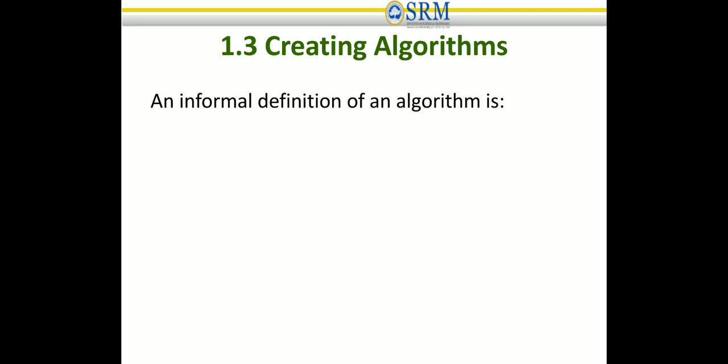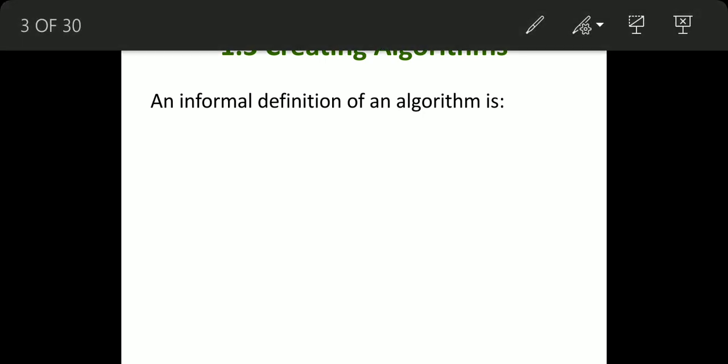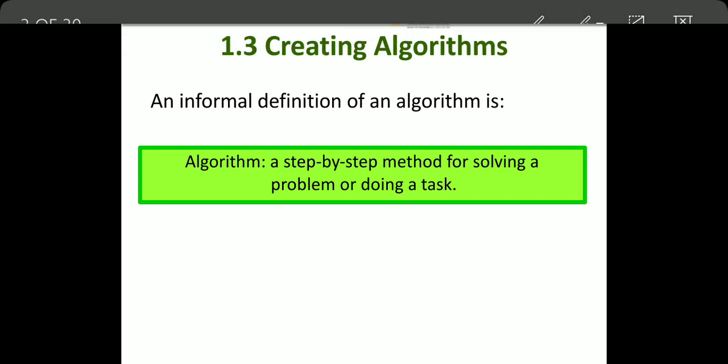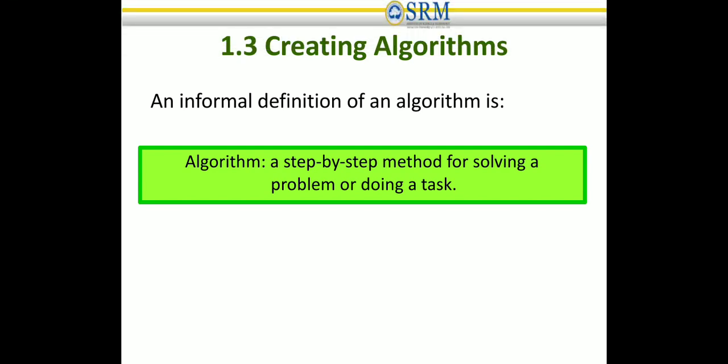An informal definition of an algorithm is a step-by-step method for solving a problem or doing a task. An algorithm is an outline of the steps that the program or any computation procedure has to take.